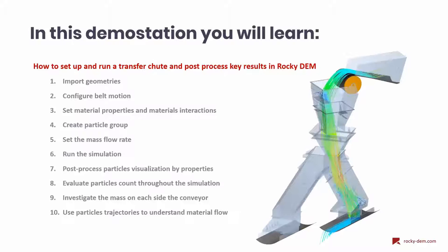In today's session, we are going to show how to set up a DEM simulation and do some post-processing analysis in Rocky. We will begin by importing the geometries of the transfer chute, then set the belt motions, configure material properties and material interactions. Next, we create the particle group and set the mass flow rate. Once the setup is done, we run the simulation. Then we will show how to color particles by certain properties like velocity, evaluate the amount of particles in the domain, analyze how much material we have on each side of the receiving conveyor, and create particle trajectories to understand the material flow.